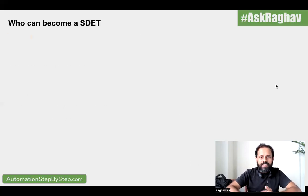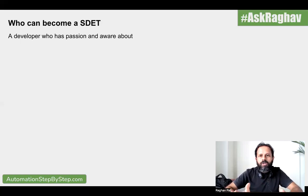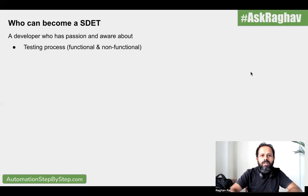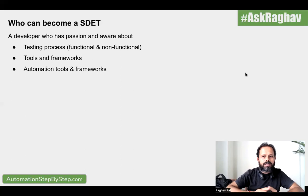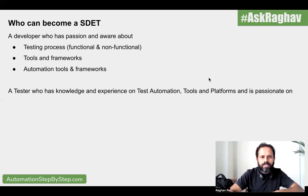Now, who can become an SDET? As we have seen, this role was born as per the need in an Agile process and methodology, so it was not there traditionally. Therefore, there is no fixed curriculum or fixed skill set that qualifies you. Basically, a developer who has passion and awareness about testing and is ready to learn the testing process — functional and non-functional testing, tools, automation frameworks, and design and development of these frameworks — can become an SDET. They already have knowledge of the dev process and programming language, and can also learn the testing and deployment side of things.